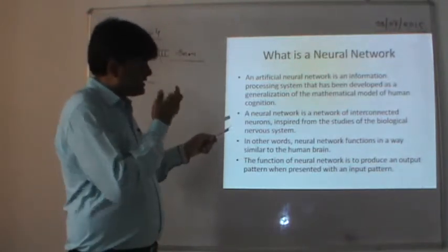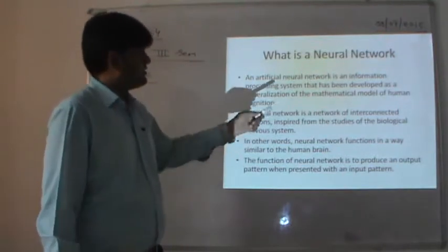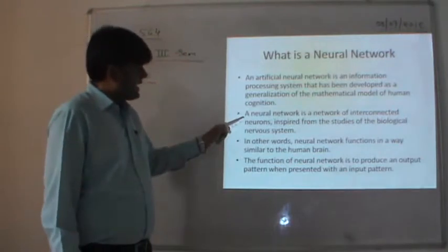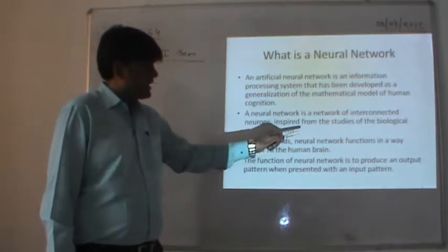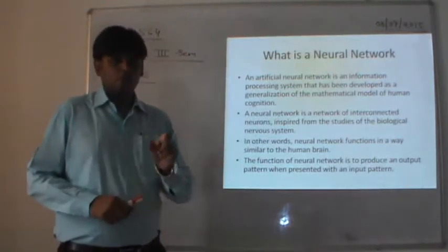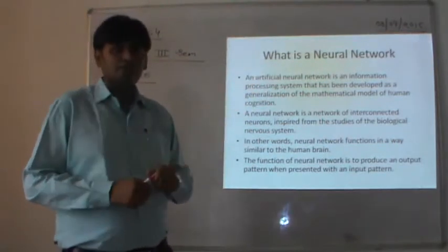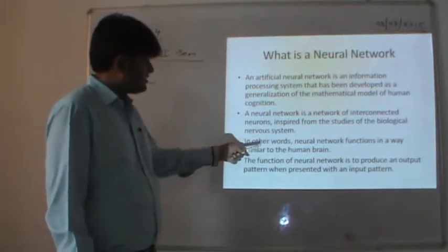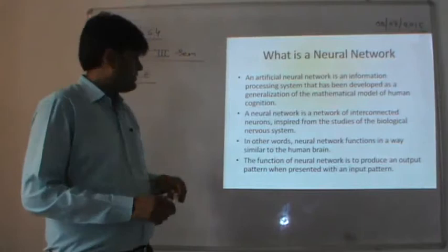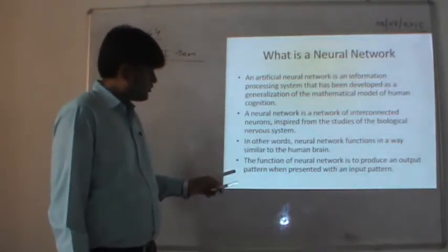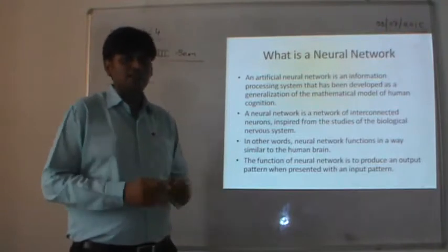To understand the artificial neural network, we must first understand the neural network. A neural network is a network of inter-connected neurons inspired from the studies of the biological nervous system. Neurons are part of the human brain, and the inter-connection between neurons makes a neural network. The neural network functions similarly to the human brain, and its function is to produce an output pattern when presented with an input pattern.